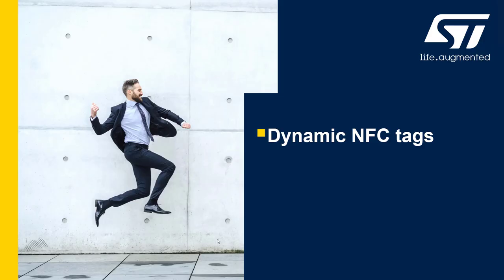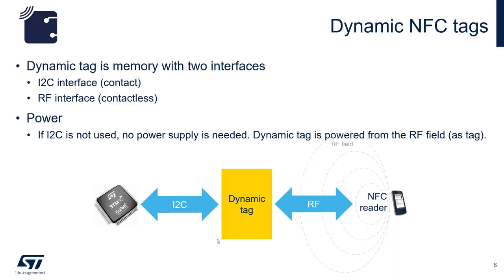First, we are going to look at dynamic tags. A dynamic tag is a memory with two interfaces — you can access it via RF wirelessly or I2C wired. Think of it as a dual-ported memory. If I2C is not used, the dynamic tag acts no different than a typical passive RFID tag — no power or battery needed.